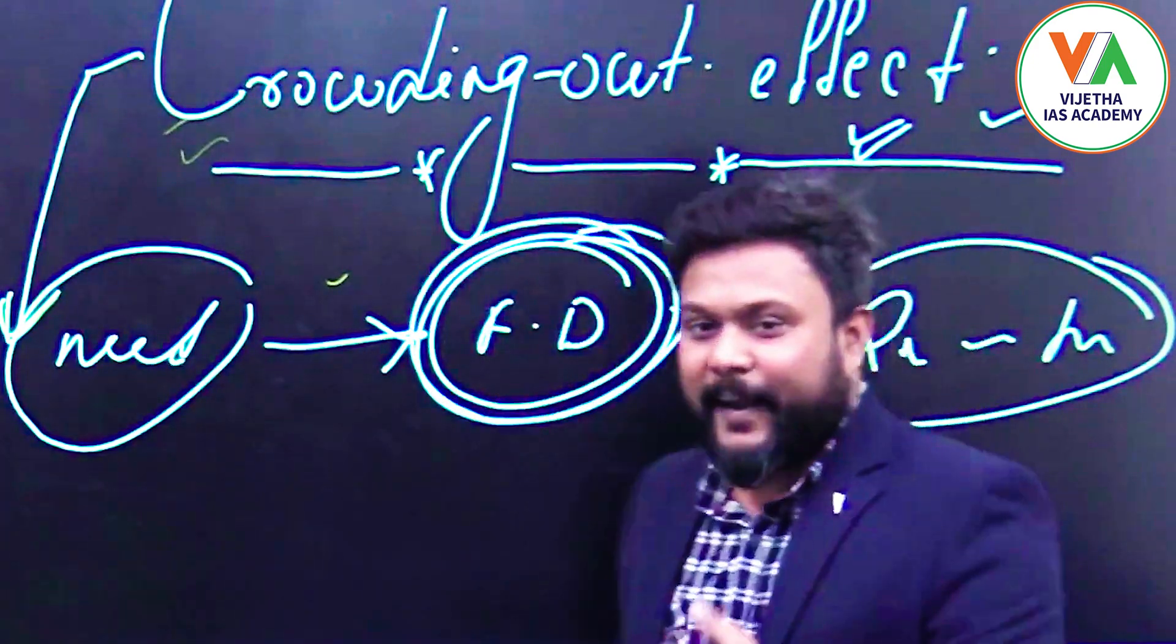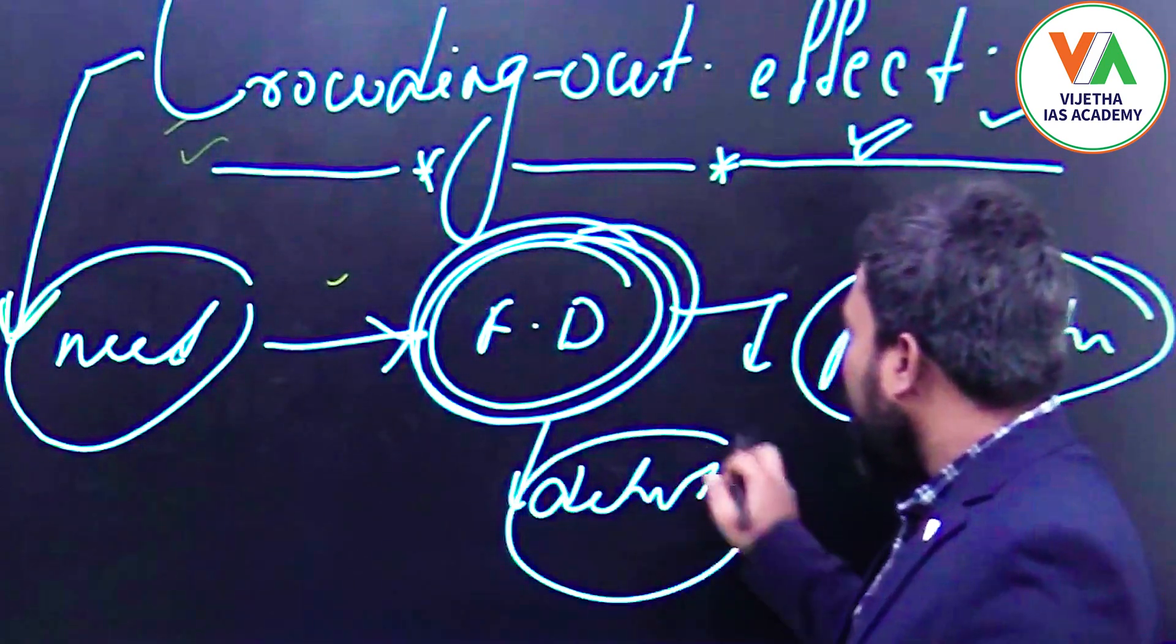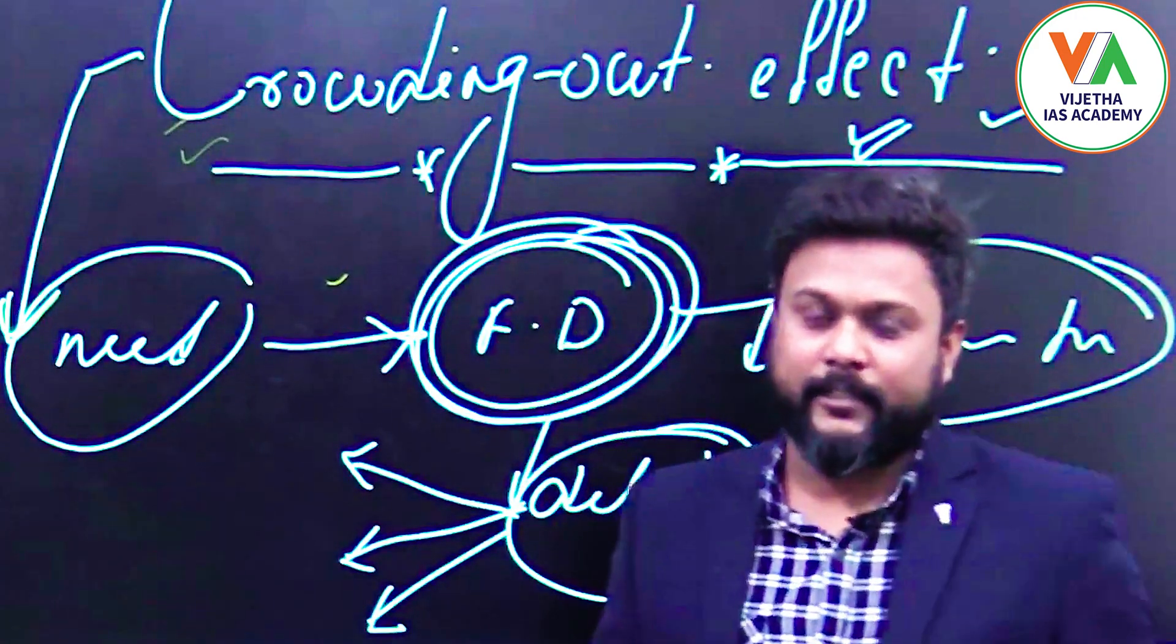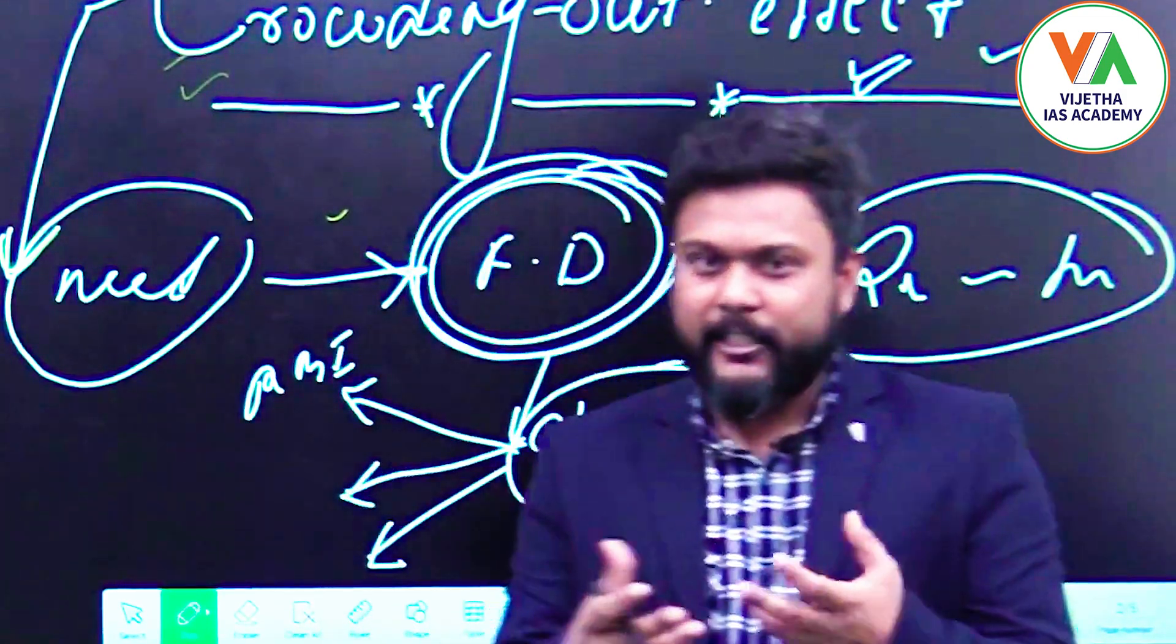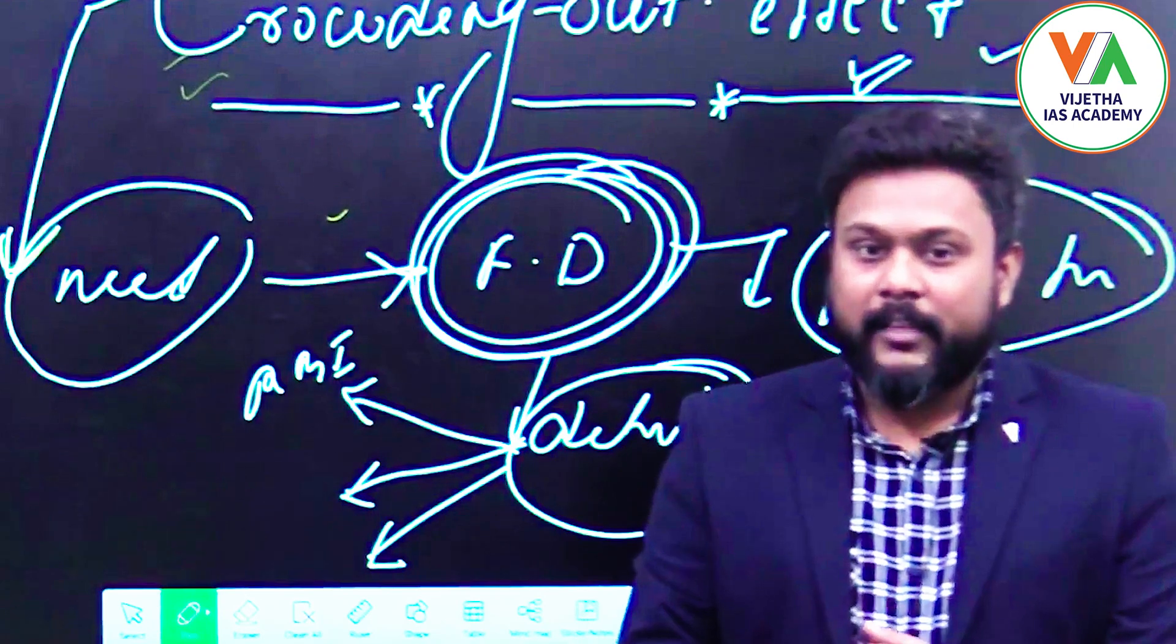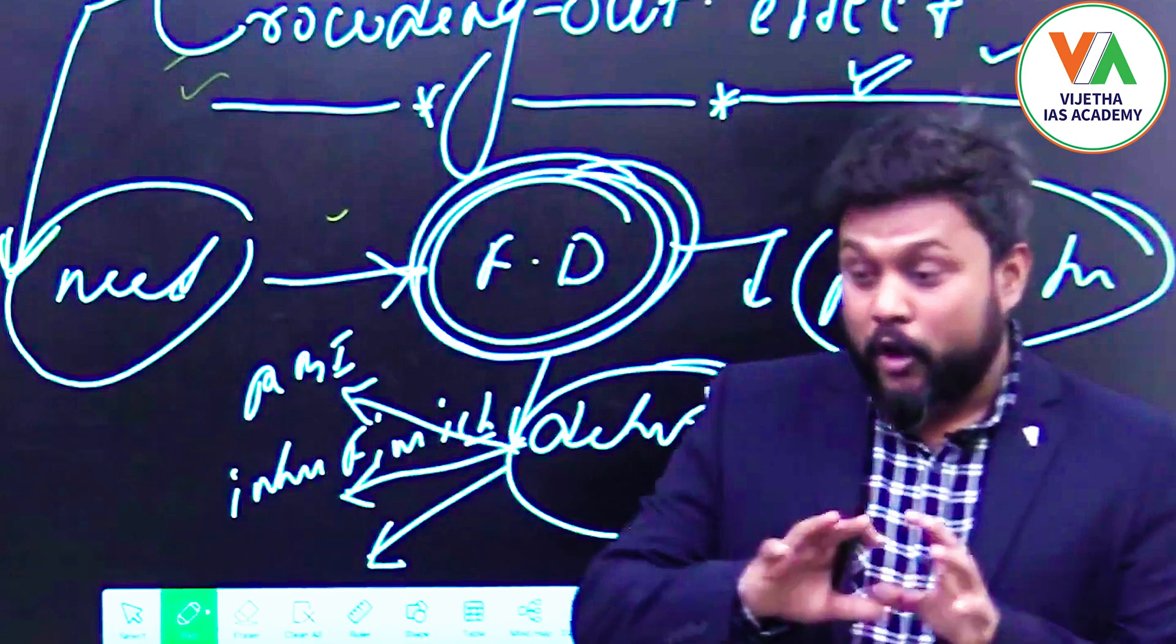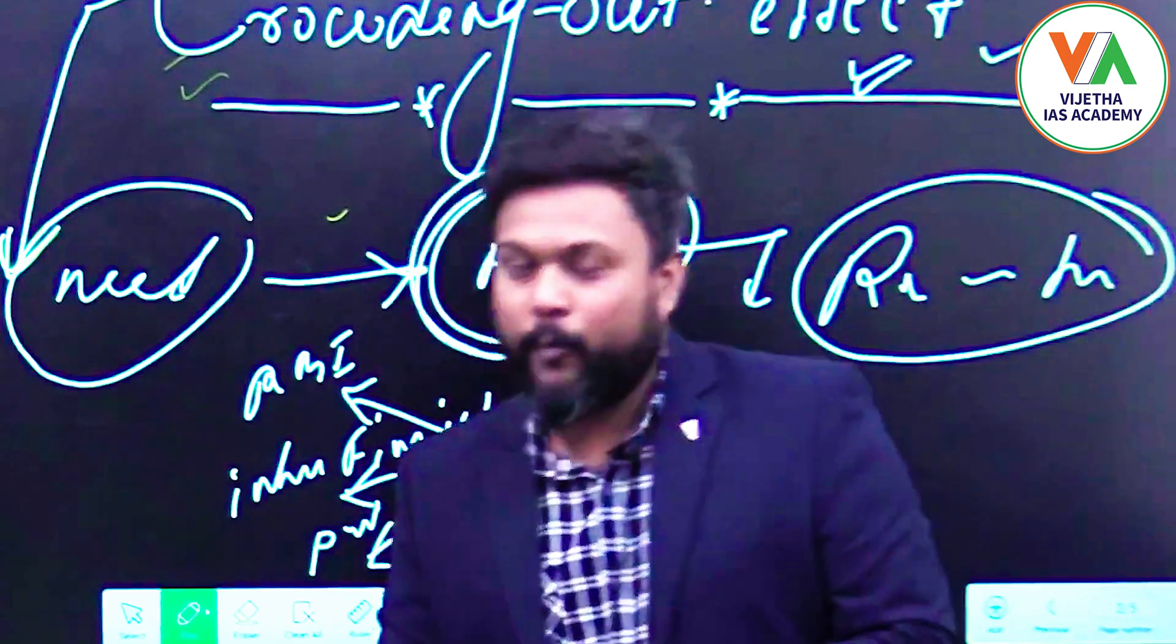When the government's expenditure is more than its income, it leads to deficit. This deficit is to be augmented by the government, or this deficit is to be filled by the government through different sources. First, the government can resort to borrowing from the RBI itself, which is done by an instrument called Ways and Means Advances. Or the government can also borrow from international financial institutions such as IMF and World Bank. Or the government can also go to the public, which is called the open market operation, OMO.